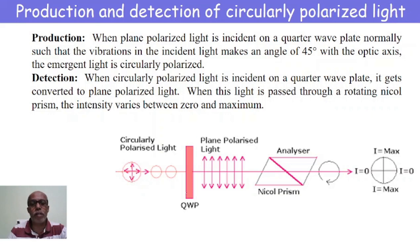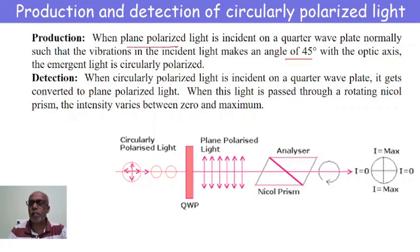If that plane polarized light is made to be incident normally on the quarter wave plate, such that the vibrations of the incident light make an angle of 45 degrees with the optic axis, then the emergent light is said to be circularly polarized. In order to produce circularly polarized light, we make use of plane polarized light, and that plane polarized light is made to be incident normally on the quarter wave plate such that the vibrations make an angle of 45 degrees with the optic axis.